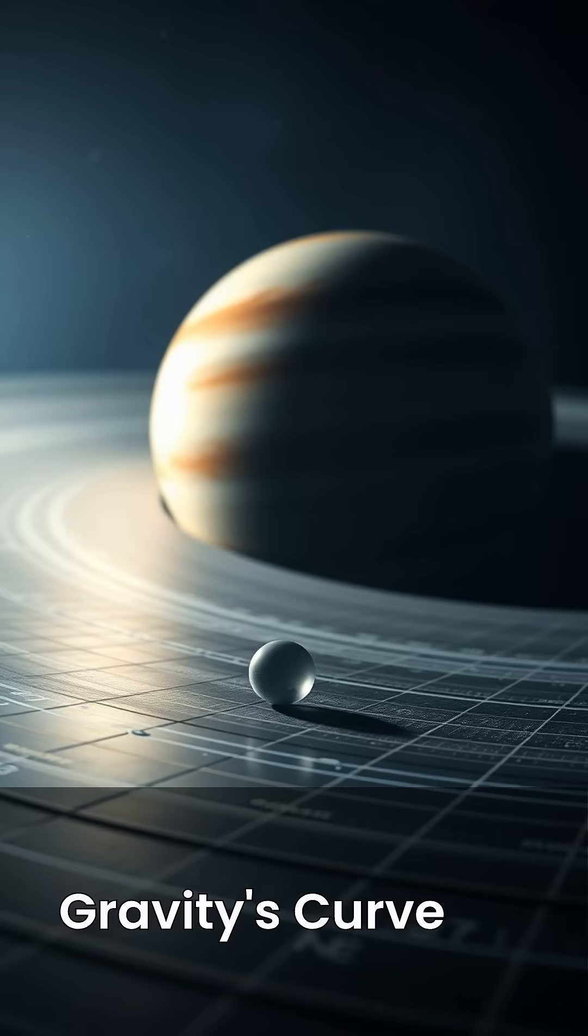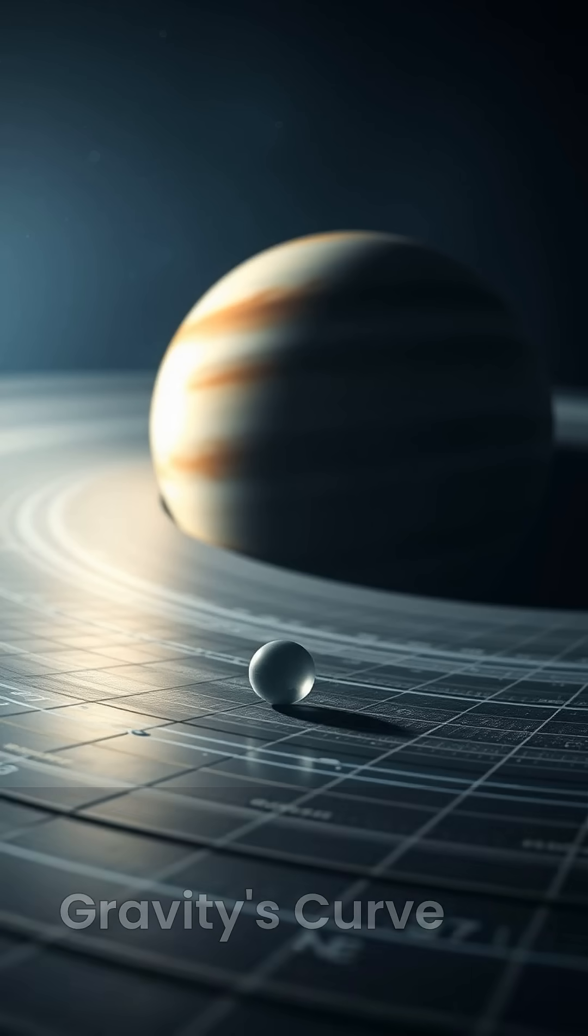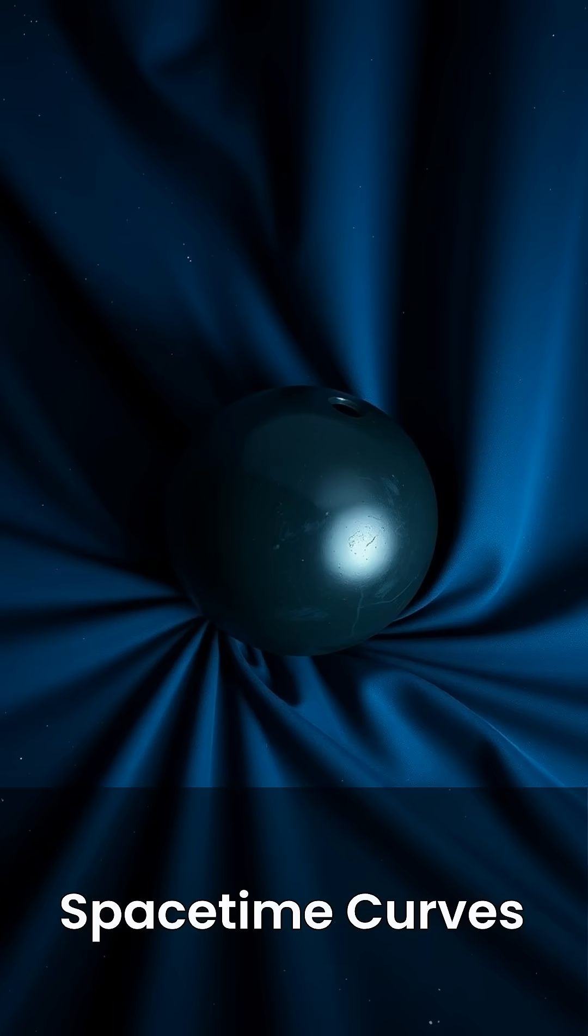Now, when a smaller object, like a marble, rolls near this dent, it doesn't get pulled by the bowling ball. Instead, it simply follows the curve of the fabric that the bowling ball created.